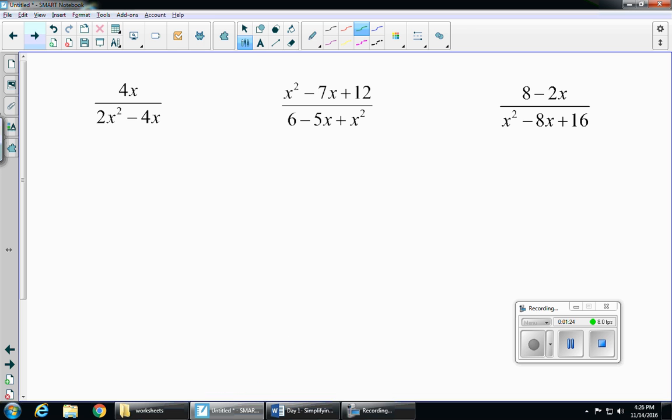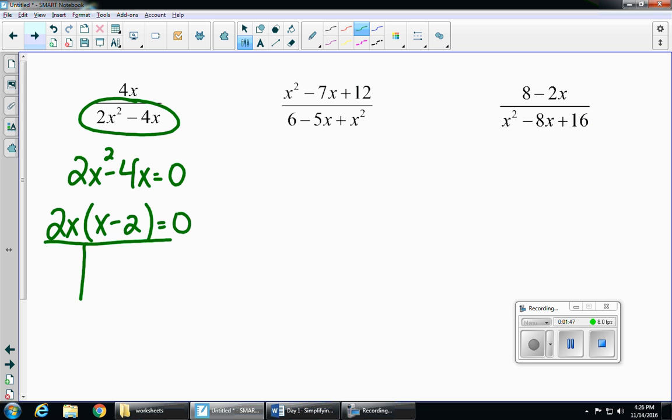Let's take a look at three more examples. So in my first one, once again, I'm looking for undefined values, so I'm worried about the denominator only. So 2x squared minus 4x equals 0. Once again, I have a GCF, so I'm going to take out a 2x, and I'm left over with x minus 2. So we set each factor equal to 0, we get x equals 0 and x equals 2.